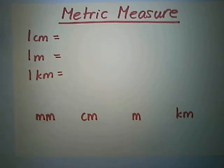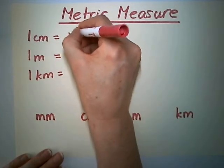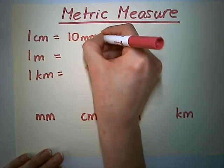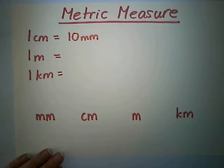One centimeter has 10 millimeters on it. Rulers are normally in centimeters, and between each centimeter there'll be 10 millimeters on that ruler. If you've got any rulers lying about, you can have a look.